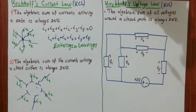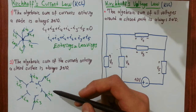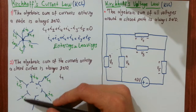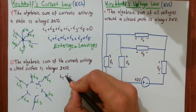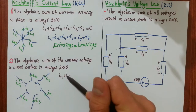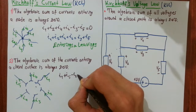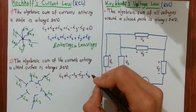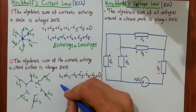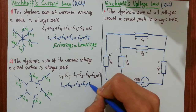Let's write the KCL equation. I will take leaving currents as plus and entering currents as minus. I1 and I5 are leaving the surface — those are the leaving currents. The entering currents are minus I2, minus I3, minus I4, and minus I6, and this equals zero by KCL.